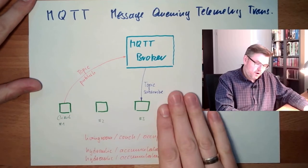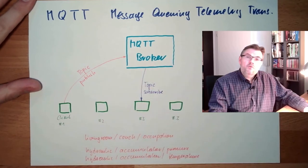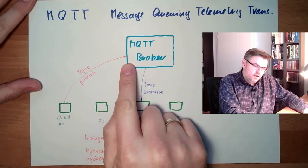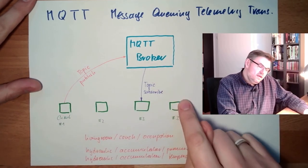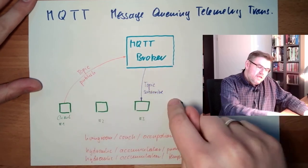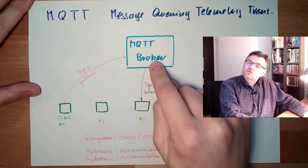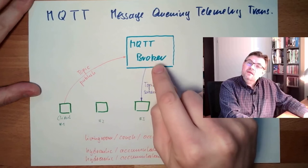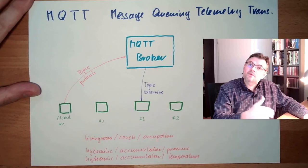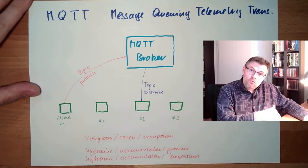Publish and subscribe. Now, the retain flag: if the retain flag was set during publish and a new subscriber is interested in exactly this topic, it will immediately get the last known value. If a topic is not retained, a new subscriber will only get information at the next update — when it is published again. If it is retained, you immediately get back the last known value.